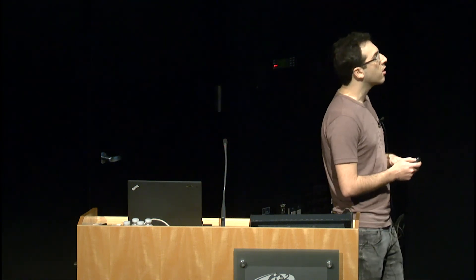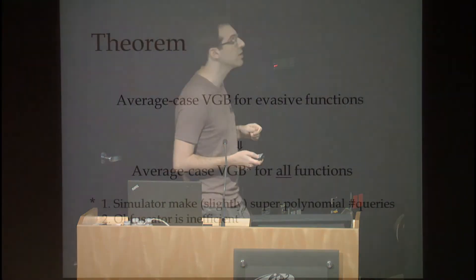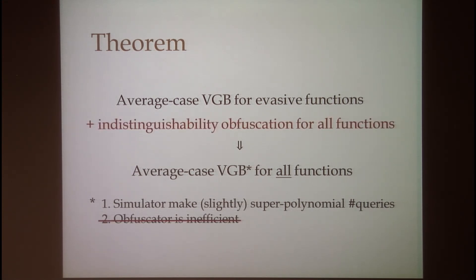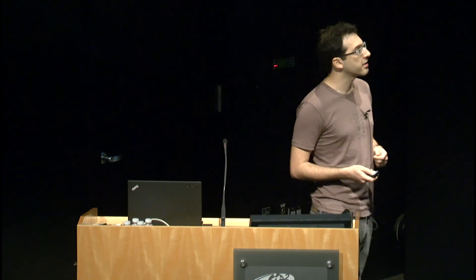This weaker form of VGB allows the simulator to make a slightly super-polynomial number of queries and also lets the obfuscator itself be inefficient, while still requiring the obfuscated circuit to be efficient. We also have a corollary that average case VGB for evasive functions together with indistinguishability obfuscation for all functions implies average case VGB for all functions, this time with efficient obfuscators. The idea is to use the indistinguishability obfuscator instead of the inefficient one, and based on the fact that it's the best possible obfuscator, prove it also satisfies VGB security.